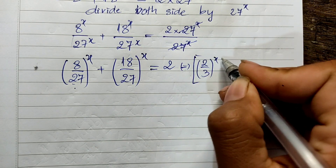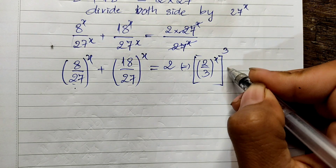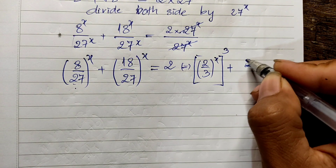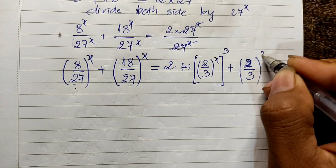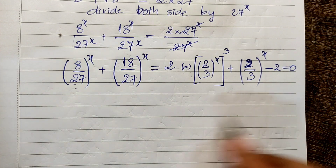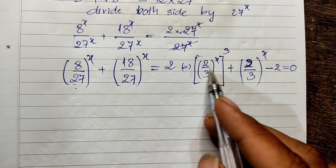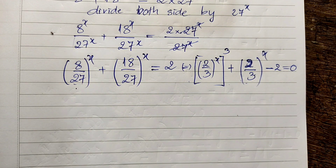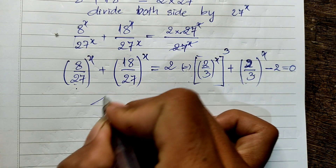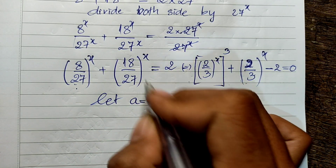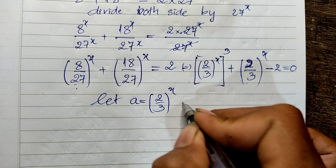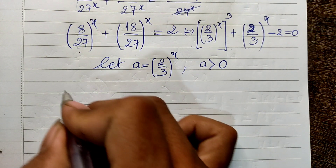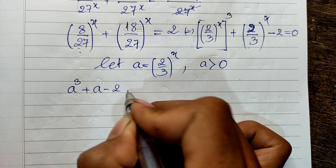So I get 2 divided by 3, all to the power 8, plus another 2 divided by 3 term, all to the power 8, minus 2 equals 0. Since both terms involve 2 divided by 3 to the power 8, I can let a equal 2 divided by 3, all to the power 8, where a is positive. This gives the new equation: a cubed plus a minus 2 equals 0.